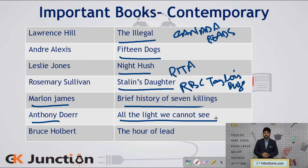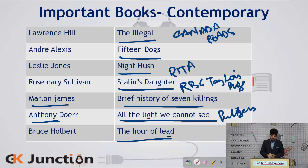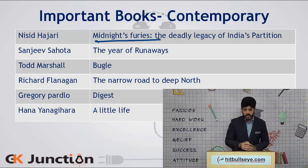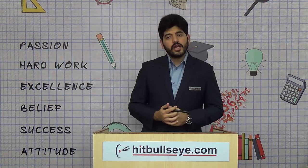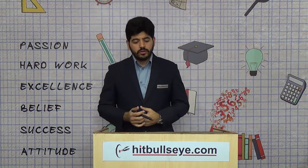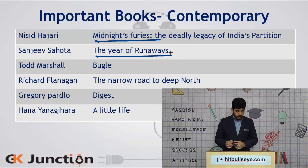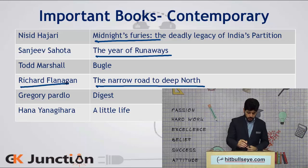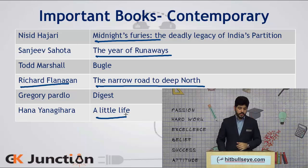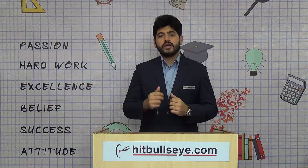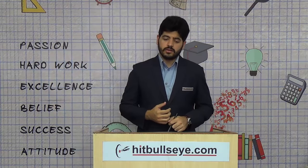Anthony Doerr wrote 'All the Light We Cannot See', which won the Pulitzer Prize for fiction. Bruce Holbert wrote 'The Hour of Lead', which won the Washington State Prize. We also have Nisid Hajari's 'Midnight's Furies: The Deadly Legacy of India's Partition', which tells us about the scenario in 1947 and how India was partitioned. Sanjeev Sahota's 'The Year of the Runaways' is also important. 'The Narrow Road to the Deep North' was written by Richard Flanagan. 'A Little Life', a nominee for the Man Booker Prize, was written by Hanya Yanagihara. All these books are very important for us to be aware of.